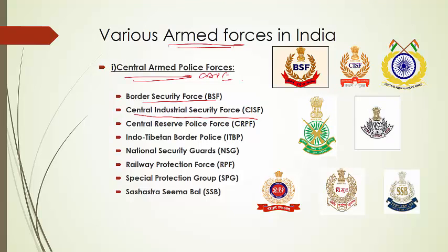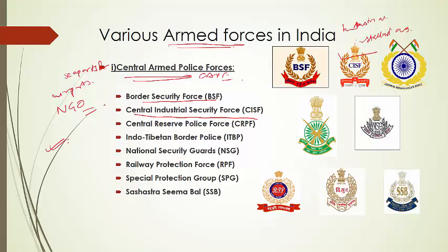Next is the CISF — Central Industrial Security Force. CISF is used to guard industrial installations owned by the central government, as well as securing seaports and airports. CISF also provides security to certain NGOs and is the largest industrial security force in the world. Industrial sectors like atomic power plants, space installations, defense production units such as Indian Ordnance Factories and DRDO are also protected by CISF. It also provides consultancy services to private industries and other government organizations.